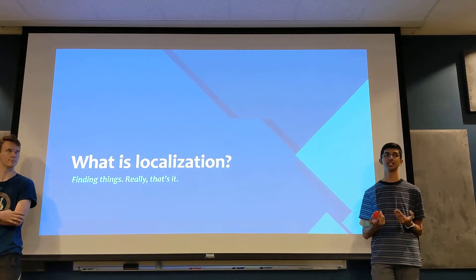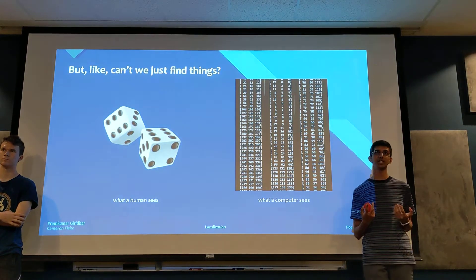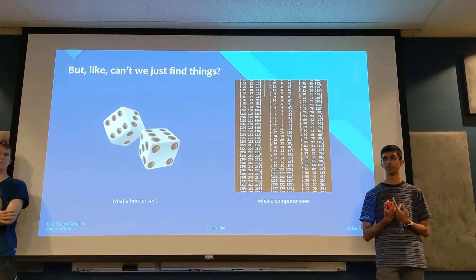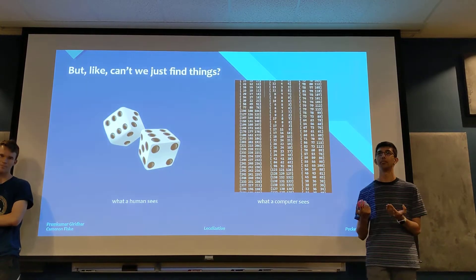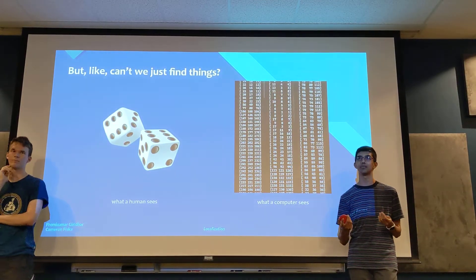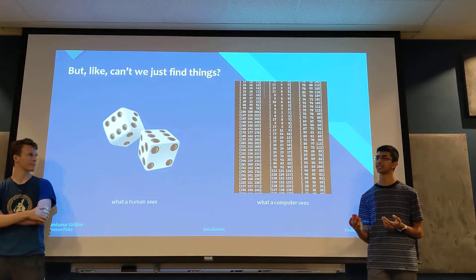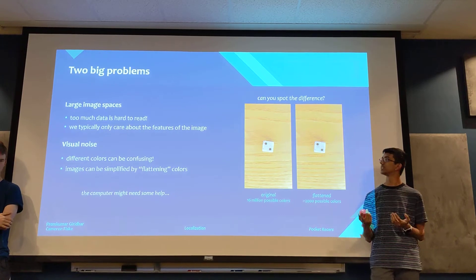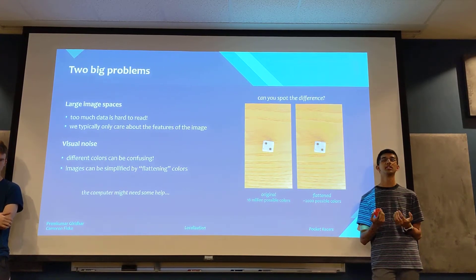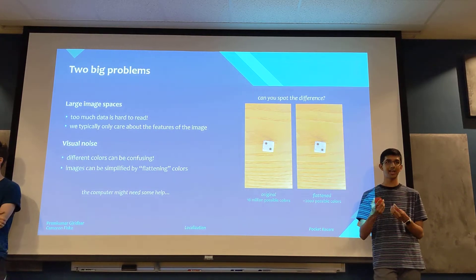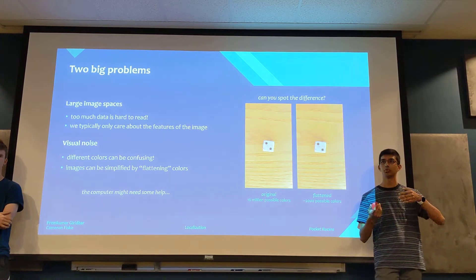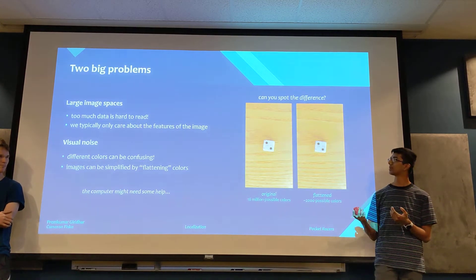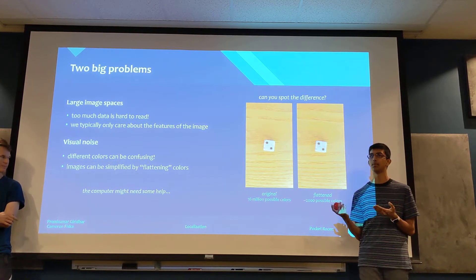First, we'll talk about what localization actually is. It's basically just finding things, except using a computer. When we look at something — whether it's the dice or something else — it's easy for us to recognize it because we have a brain that can process images. But to a computer, it's all just numbers. There are two big problems with computers reading images. The first is the concept of a large image space, which refers to the fact that too much data in an image is hard to read. Just like how looking at a page with 900 numbers would cause your eyes to glaze over, a computer won't pick up on the big picture if there are too many pixels.